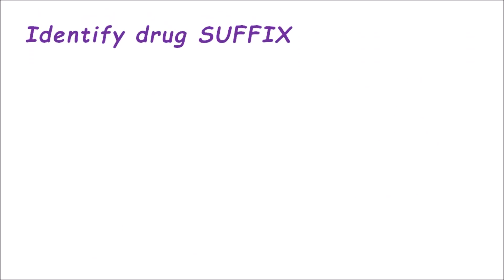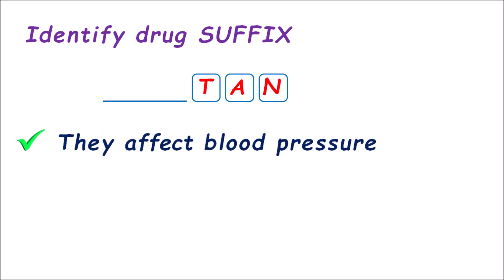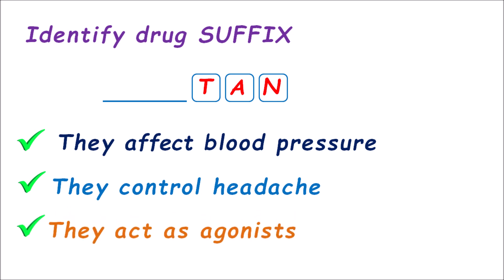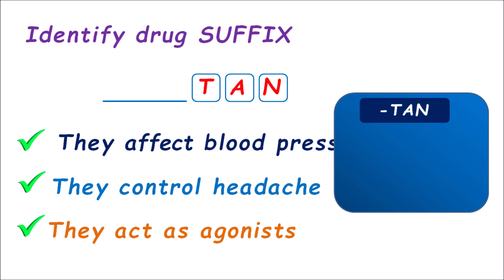Next puzzle: identify the drug suffix. This drug has the suffix T-A-N. The clues are: they affect blood pressure, they control headache, and they act as agonists. With these clues we have to identify the proper drug suffix. Let us list out drug suffixes ending with '-tan.' Sartans are one group used as antihypertensives, and triptans are another group used to treat migraine. Both categories share the similar suffix '-tan.'